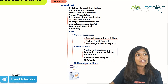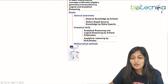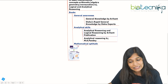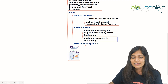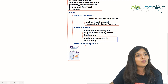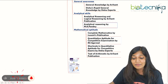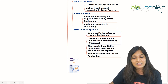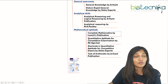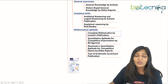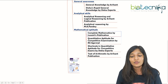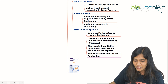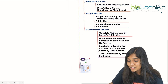For analytical skills, you can go for Analytical Reasoning and Logical Reasoning by Arihant, or Analytical Reasoning by M.K. Pandey — whichever is comfortable for you. For mathematical aptitude, you can go for Lucent Publication's Complete Mathematics, or Quantitative Aptitude for Competitive Examinations by R.S. Agarwal, or Shortcuts in Quantitative Aptitude by Disha Experts. You can also follow Test of Arithmetic by Arihant Publication.